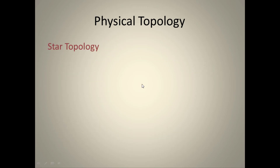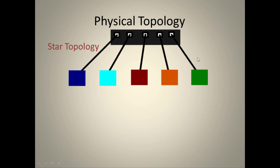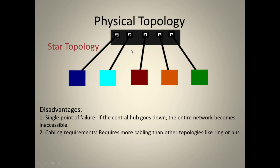In star topology, all hosts connect to a centralized hub. Advantages include cost effectiveness, less cabling, ease of installation and reconfiguration, robustness — if one link fails the other hosts continue — and easy fault isolation through centralized monitoring. The disadvantage is that if the hub fails, the entire network becomes inaccessible. Also, compared to bus and ring topologies, star topology requires more cabling.